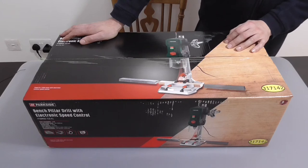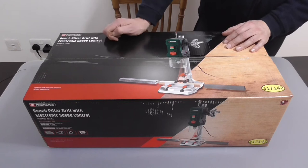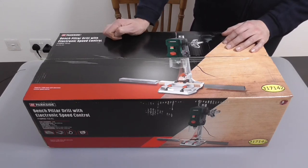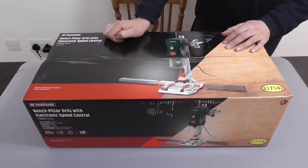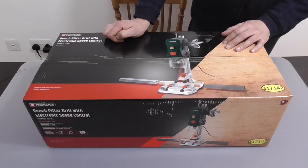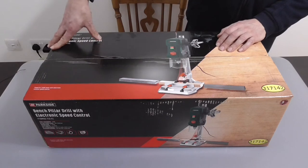It has a no-load speed of between 500 and 2600 RPM, a drilling stroke of 0 to 70mm, a chuck capacity of 1.5mm to 13mm, and a maximum drilling capacity in wood of 40mm and in steel 13mm.